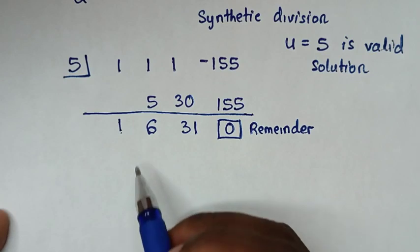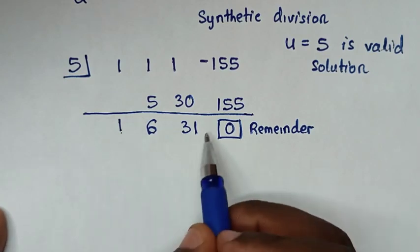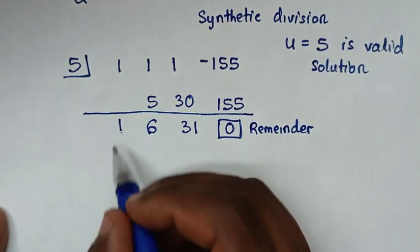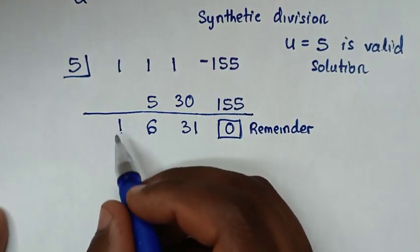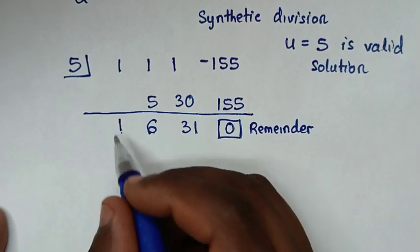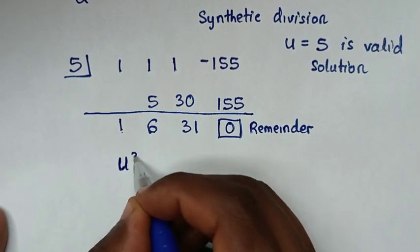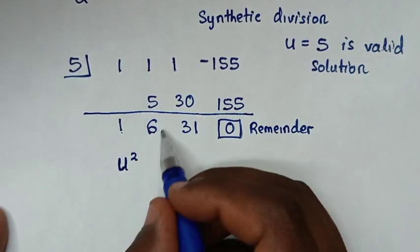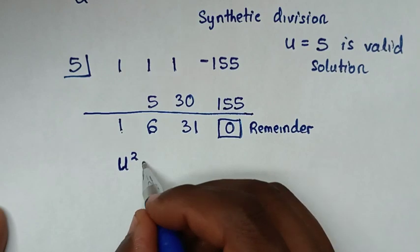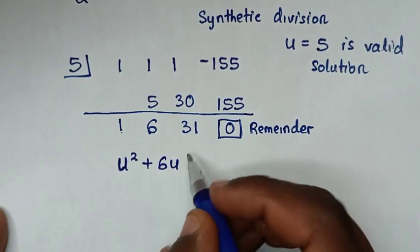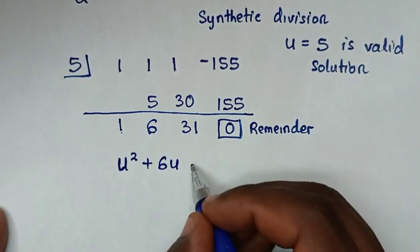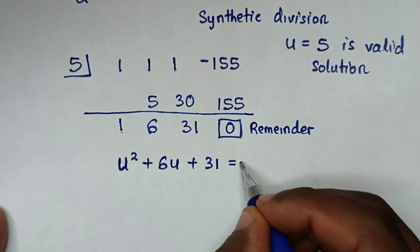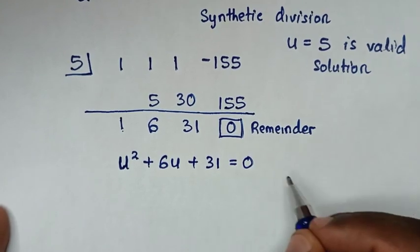Now we examine the remaining quadratic factor. The coefficient of u squared is 1, the coefficient of u is 6, and the constant is 31. So the quadratic is u squared plus 6u plus 31 equal to 0.